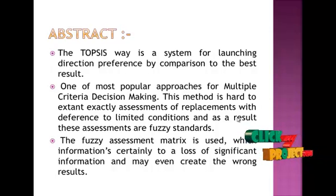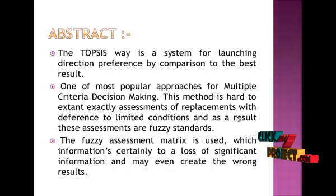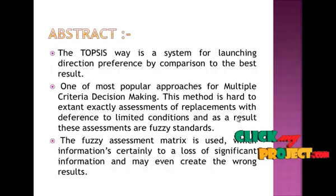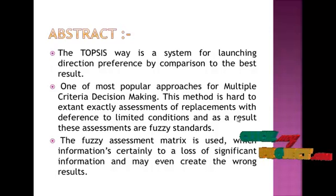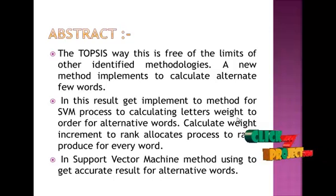In our proposed method, the SVM method is used to calculate and analyze the result. The fuzzy assumption matrix is used with information, but it can cause loss of significant information and may even create wrong results. Our method calculates results through the fuzzy assumption matrix without losing multiple results. Using our new method, we get the best result with no information loss — it is free of the limitations of other identifying methods, and implements calculations with alternate few words.